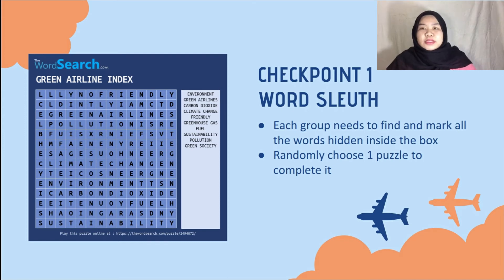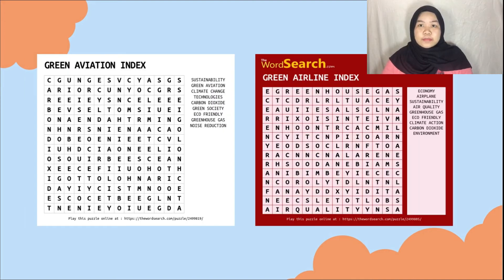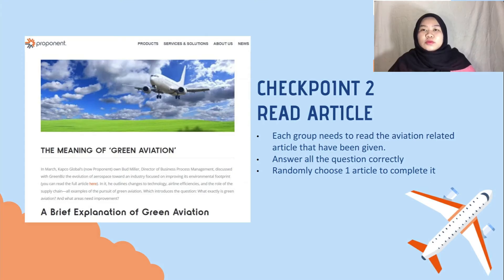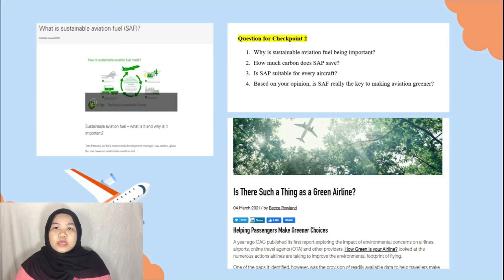There are five checkpoints that every group needs to go through. Checkpoint number one is word search. Each group needs to find and mark all the words. These are a few examples of words that we will use at this station. Checkpoint number two is read article. Each group needs to read an aviation-related article and answer all the questions correctly. We have prepared several articles related to the Green Airlines index, and the group will choose one randomly.